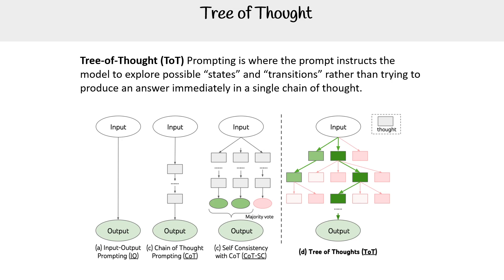Here's a diagram you'll see a lot every time you look up tree of thought. Everyone's using the same diagram, so I pulled it as well. Here you see option A has input-output prompting. That's just where you give it an input and you get an output, like zero or few shot or chain of thought prompting where we tell it to think through things.